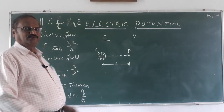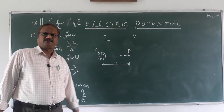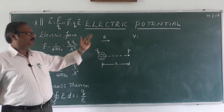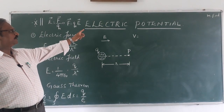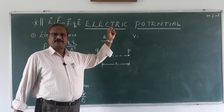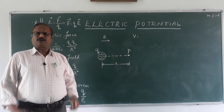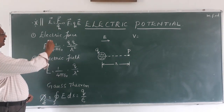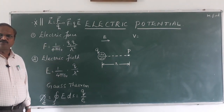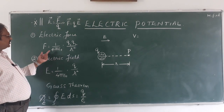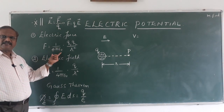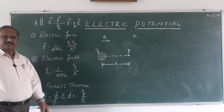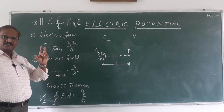Hello students, today we shall move to the second unit of the first chapter. Here we are going to learn about electric potential. Let us see what we learned so far: we learned about electric force using Coulomb's law, F is equal to 1 upon 4 pi epsilon naught, q1 q2 upon r square.